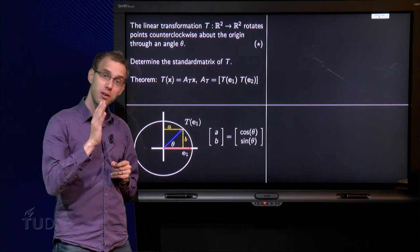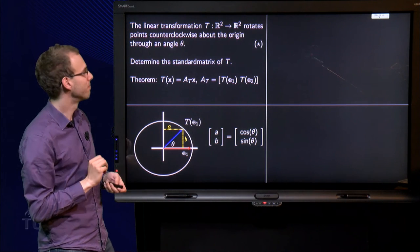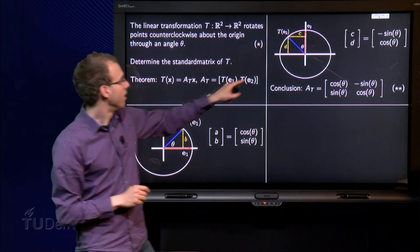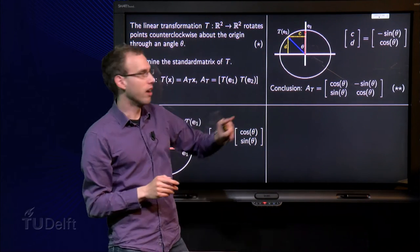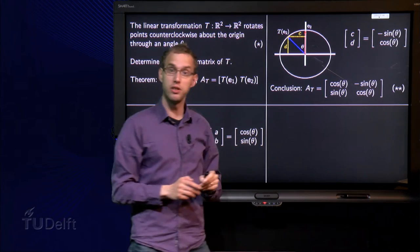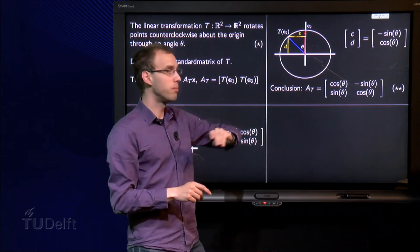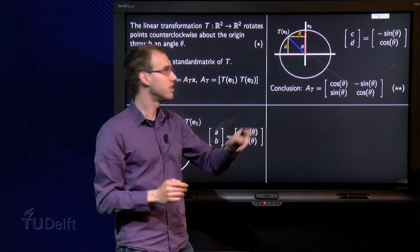That's e₁. Continue to e₂. Slightly harder. Here we have e₂, we draw again the circle, because we rotate, so the length will stay the same.